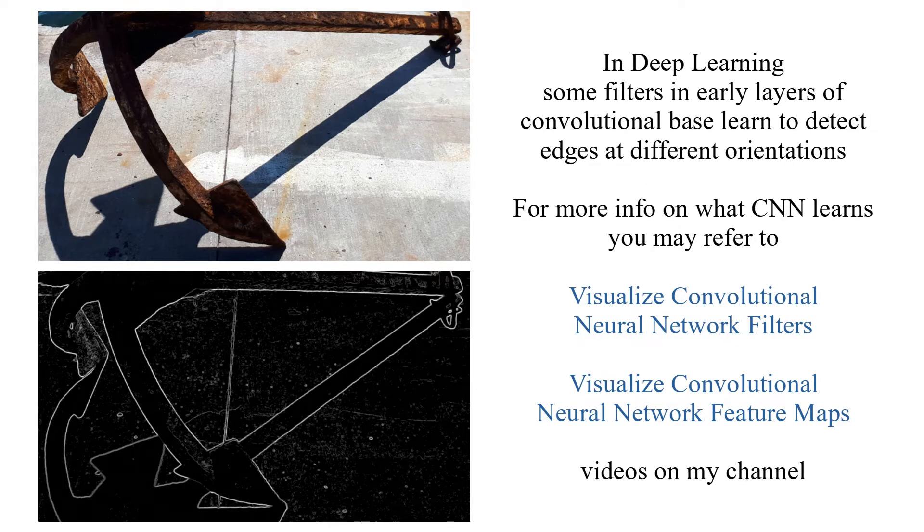In deep learning, some filters in early layers of convolutional base learn to detect edges at different orientations. For more information on what convolutional neural network learns, you may refer to Visualize Convolutional Neural Network Filters and Visualize Convolutional Neural Network Feature Maps videos on my channel.